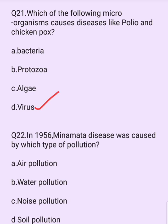In 1956, Minamata disease was caused by which type of pollution? Options are: air pollution, water pollution, noise pollution, soil pollution. The answer is option B: water pollution.